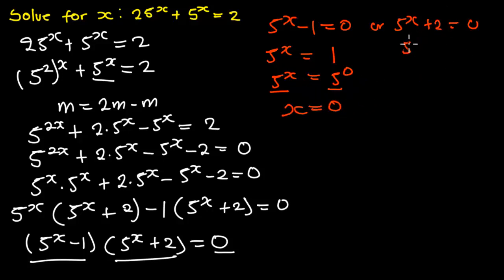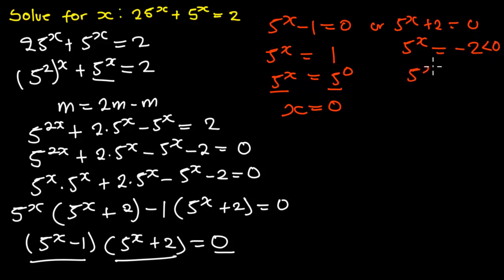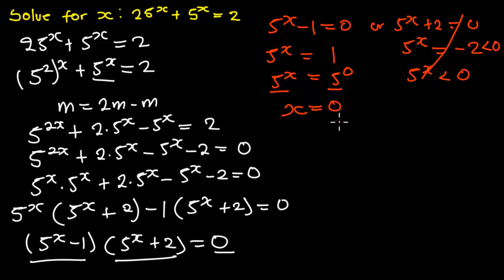From the second equation, 5 exponent x equals negative 2. Since negative 2 is less than 0, and an exponential function cannot be less than 0, we do not consider this solution. So we focus only on x equals 0 as our answer.